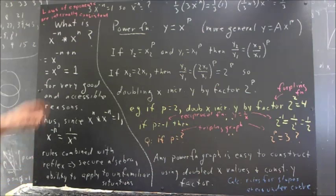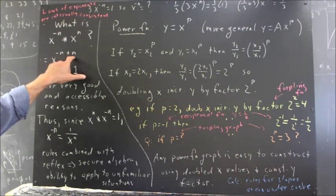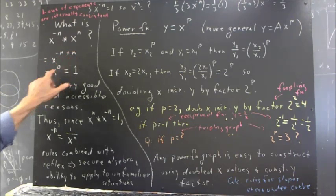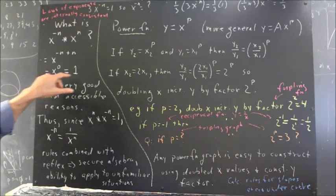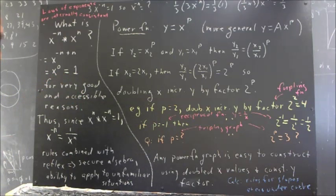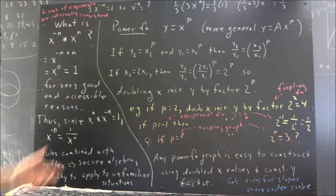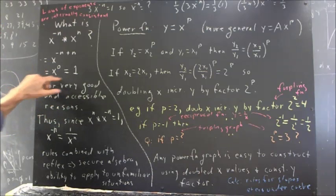Well, x to the negative n multiplied by x to the n then has to be x to the negative n plus n, which is x to the zero. Now it was handed down to you on a stone tablet that any number to the zero power is one. That's important to know, but it's also important to know why that's the case.